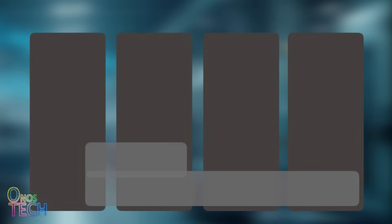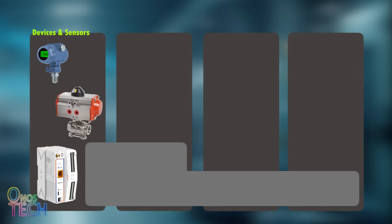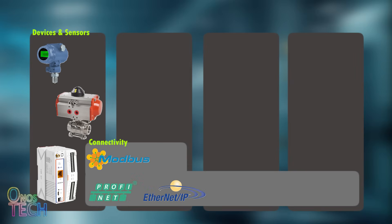The first layer is made up of sensors, actuators, PLCs, and instruments that measure temperature, vibration, pressure, and other parameters. Data is reliably exchanged from this layer in real-time with other layers using various forms of connectivity. Connectivity is the layer that moves data from devices to the edge or cloud using wired or wireless networks in real-time. Common wired protocols include Modbus, Ethernet IP, and Profinet, while wireless options include Wi-Fi, LoRaWAN, 4G, 5G, and Bluetooth. This layer is the backbone of IIoT.